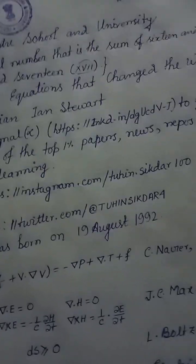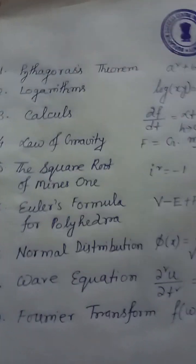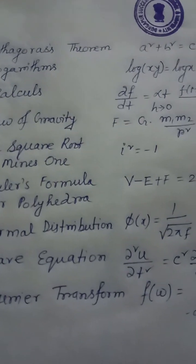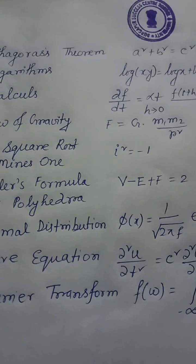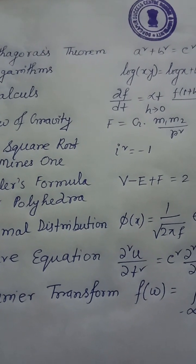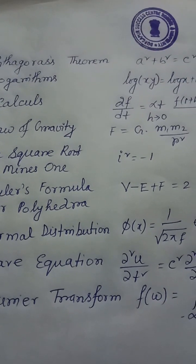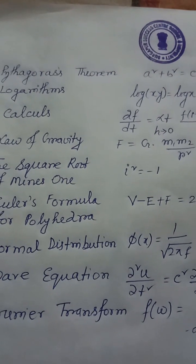Durgapur Success Center, Durgapur Success Center School and University. I am Tin Sikdar, Durgapur Success Center School and University. 17 — first bracket — 16 plus 1 is the cardinal number, that is the sum of 16 and 1. 17 means is called 17. 17 equations that changed the world, by mathematics. Sian Tuhin Sikdar.